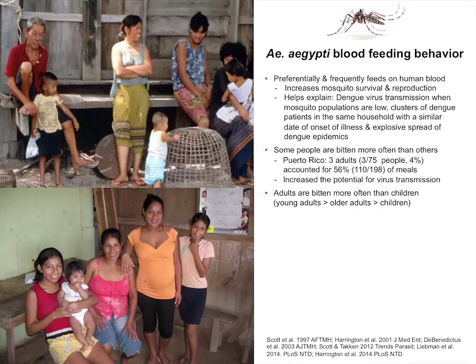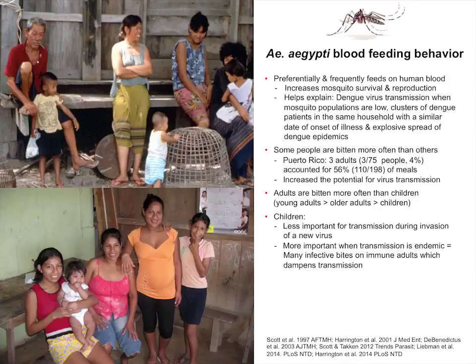In places where a virus is newly introduced and everybody is susceptible — which is what is happening in Brazil — you tend to see children not getting infected as much as adults and older people, because that's how the bites are distributed. But when you have an endemic setting where the virus has been there for a long time, the adults are immune. So there are a lot of infected bites on hosts that are protected — they're dead ends. In those situations, that's when children become important.